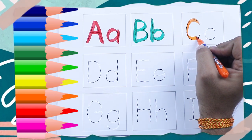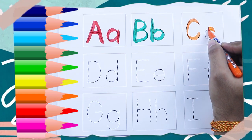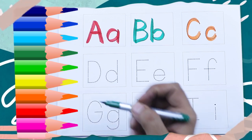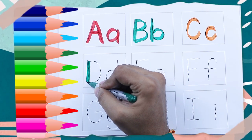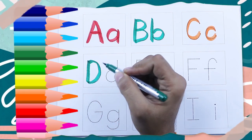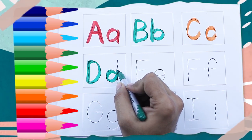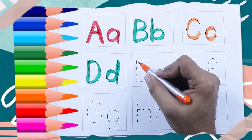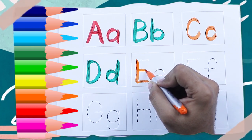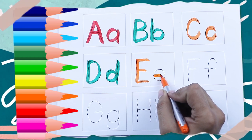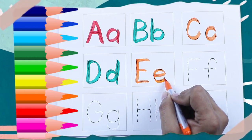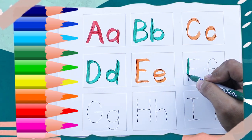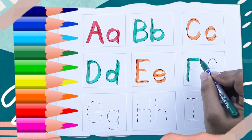Capital C, orange color. Small c, c for cat, green color. Capital D, D for dog, green color. Small d, d for dog, orange color. Capital E, E for elephant, orange color. Small e, e for elephant, green color.